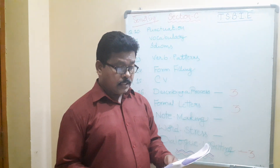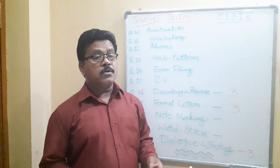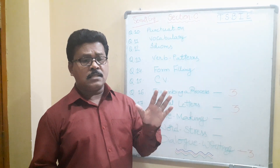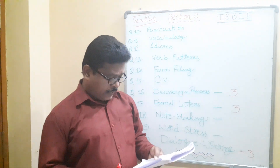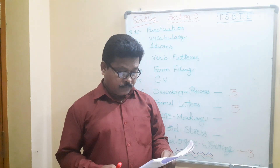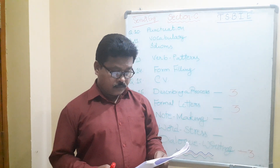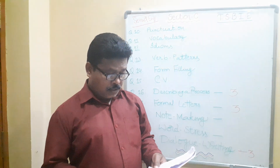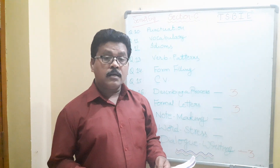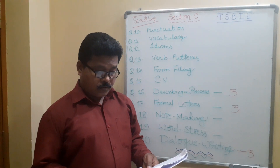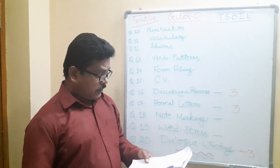In the exam, meanings are not required. We only need to write our own sentences using the idiom. For example, 'once in a blue moon — some students go to college once in a blue moon.' Write a simple sentence and underline the idiom, that's it. Idioms numbered 1, 25, 9, 11, 14, 16, 17, 18, 27, 28, 30, 31, 35, 40, 42, and 44 are very very important.